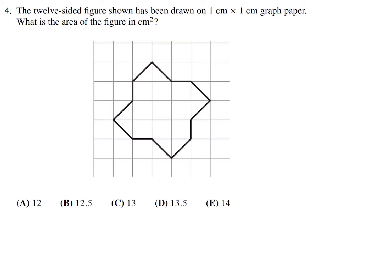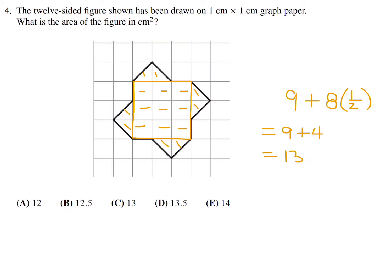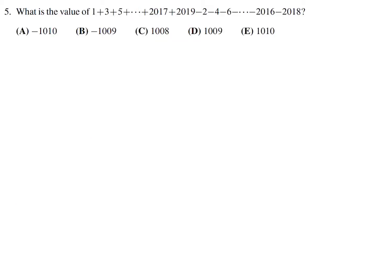The 12-sided figure shown has been drawn on 1 by 1 graph paper. What is the area of the figure? If we take the square in the middle first, that's 9 square units. Then we have 8 triangles around it, and each of those triangles has an area of one half since it's just a square chopped in half. So the total area is 9 plus 4, which is 13. Number 4, the answer is C.